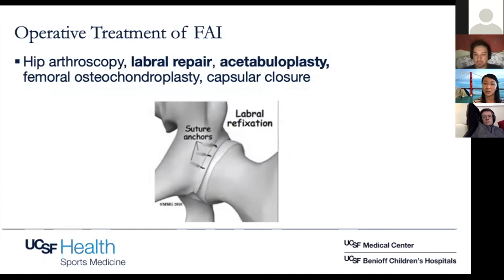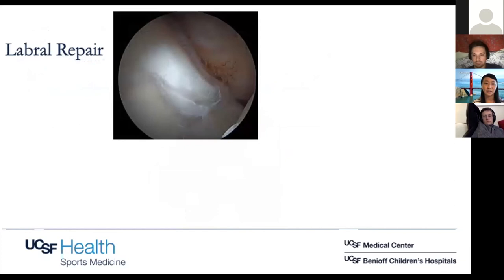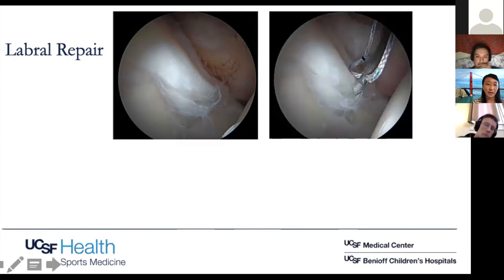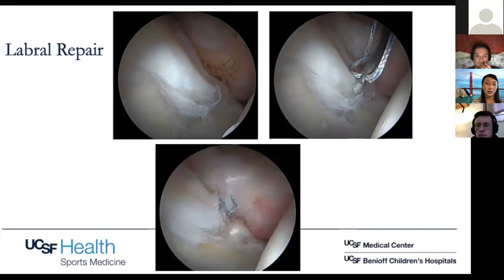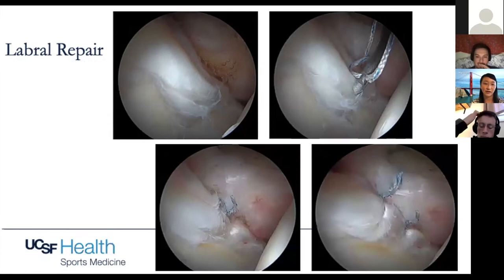Here are pictures from the labral repair portion of the case — a right hip, looking at the acetabulum on the left. You can clearly see the full thickness Beck grade 2 tear where the labrum is detached. This is a suture passing device — the anchor has already been placed into the acetabulum, and we're taking one suture and passing it behind the labrum. You can do this in a simple fashion or as a mattress suture, penetrating the labrum in two different spots. The completed repair pulls the labrum back up and restores the seal.